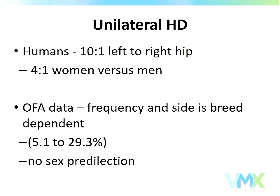While all the dysplastic examples I showed had bilateral disease, unilateral hip dysplasia is not uncommon. In humans, it's ten times more prevalent in the left hip and more prevalent in women. OFA largely matches that frequency and distribution, except it's breed-dependent. In Rottweilers, if the dog is dysplastic in one hip, I'll pick the right hip and win the majority of the time. For Golden Retrievers, Labs, Bernese Mountain Dogs, and Akitas, I'll pick the left hip. For German Shepherds, it's essentially 50-50.